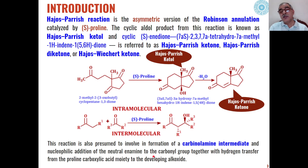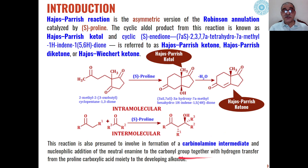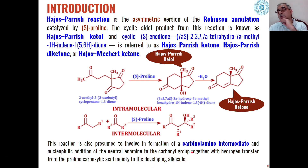As far as the mechanism of this reaction is concerned, there are many aspects and different scientists have different views about how this aldol condensation takes place asymmetrically in presence of S-proline. Some of them think that a carbinolamine intermediate is involved in the formation of the product, and nucleophilic addition of the neutral enamine, formed from this carbinolamine intermediate, adds to the carbonyl group along with hydrogen transfer from the carboxylic acid moiety of the proline to form different types of products.